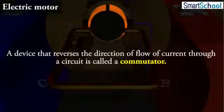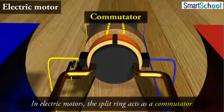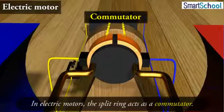A device that reverses the direction of flow of current through a circuit is called a commutator. In electric motors, the split ring acts as a commutator.